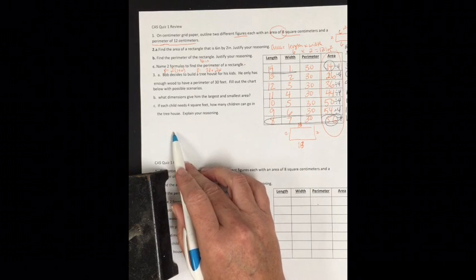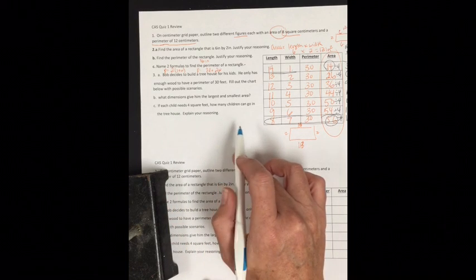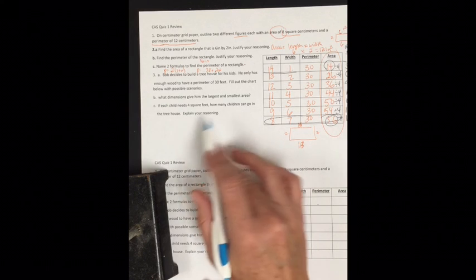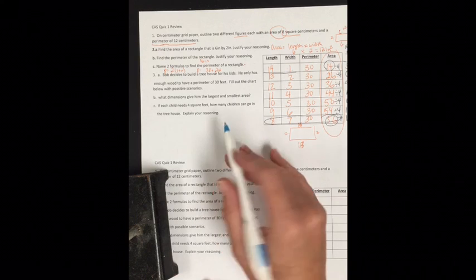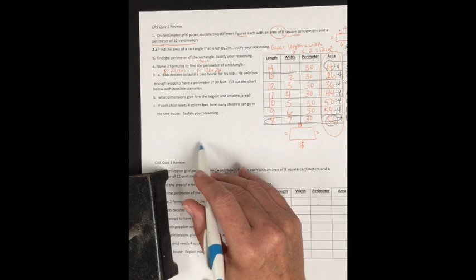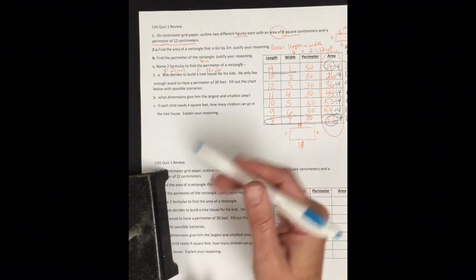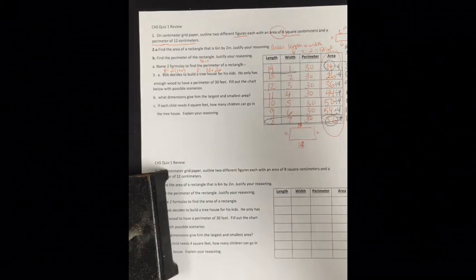For justifying your reasoning, you would say something like: I took the amount of square feet each rectangle had to offer, divided it by 4 feet since each kid needs 4 feet, and that tells me how many kids each shape could accommodate. I would also say you can't have a fraction or decimal part of a kid, so you have to round down. Hope this was helpful. Bring it for a grade on Thursday.